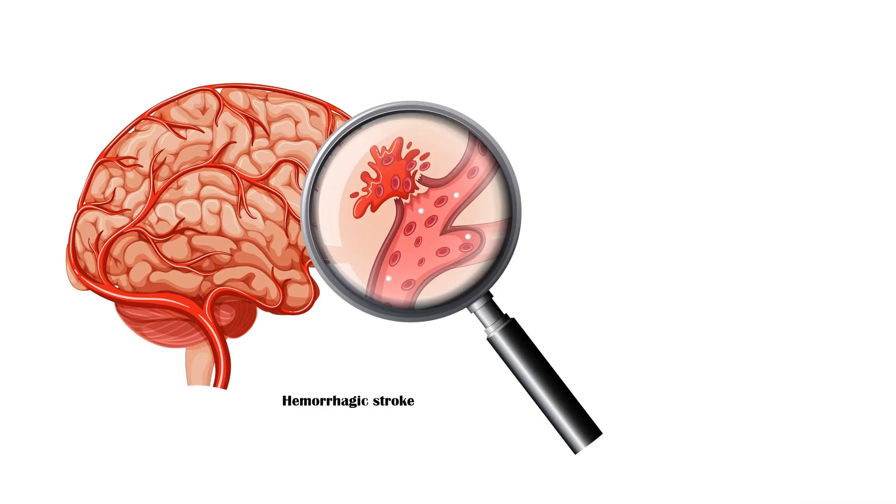Hemorrhagic stroke, on the other hand, occurs when a weakened blood vessel supplying the brain bursts and subsequently bleeds into the area. Hemorrhagic strokes account for around 10% of all cases of stroke.